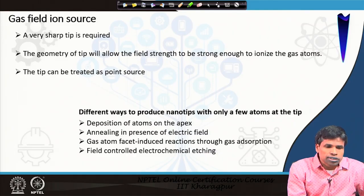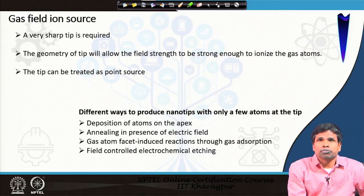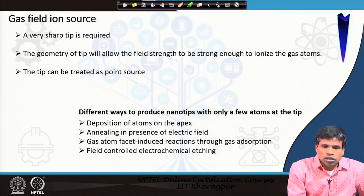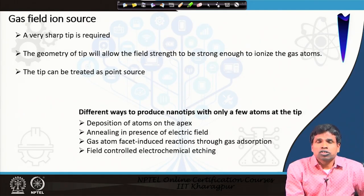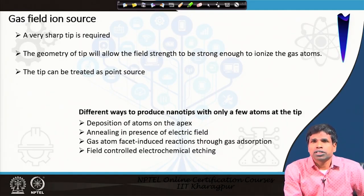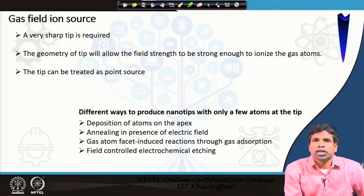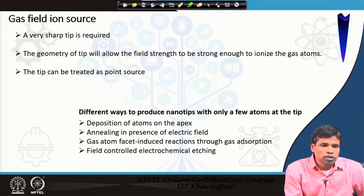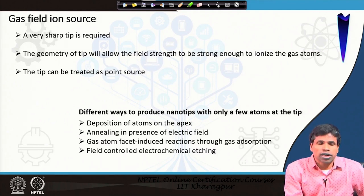Now let us look at how this gas-filled ion source works. In the scanning electron microscope we have several types of electron guns: thermionic gun, Schottky thermionic gun, lanthanum hexaboride gun, field emission gun, and Schottky emission gun — four different types. Here, we have one type of gun — the gas-filled ion source — used to produce ions.